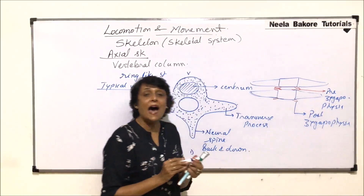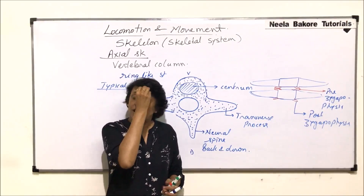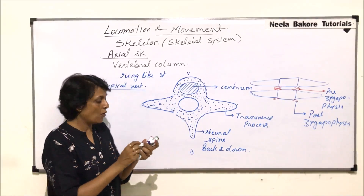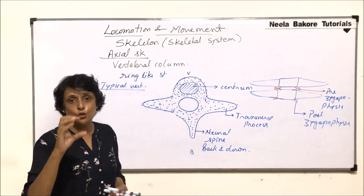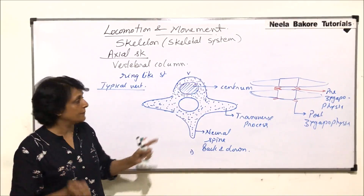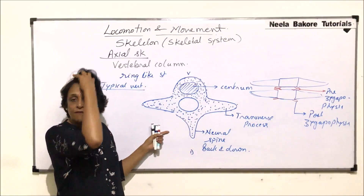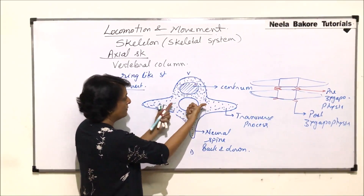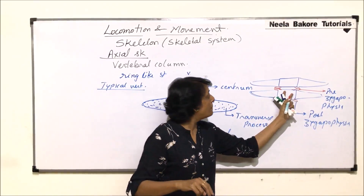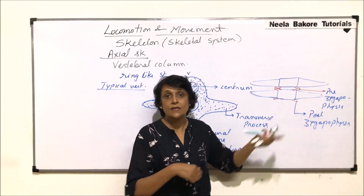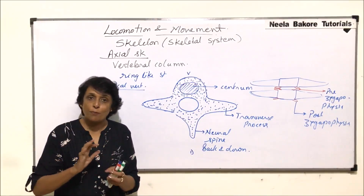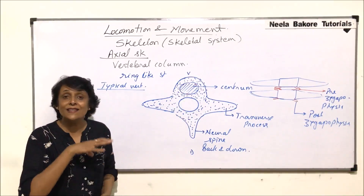Between the vertebrae there is an intervertebral disc made of fibrous tissue that acts as a shock absorber. When this disc moves from its position, the condition is known as a slipped disc. Each typical vertebra has a pair of pre-zygapophyses and a pair of post-zygapophyses, which are articulating facets allowing vertebrae to fit onto each other, with the intervertebral disc placed at the center.